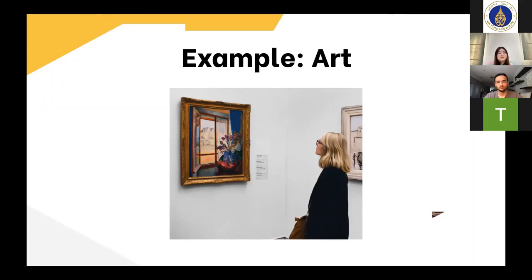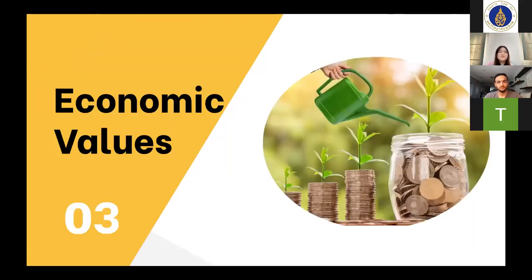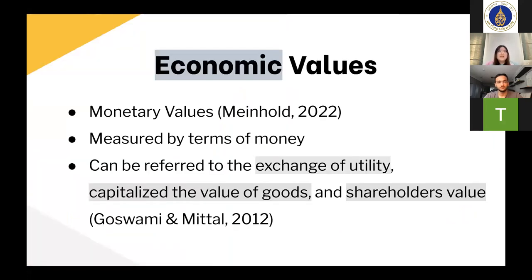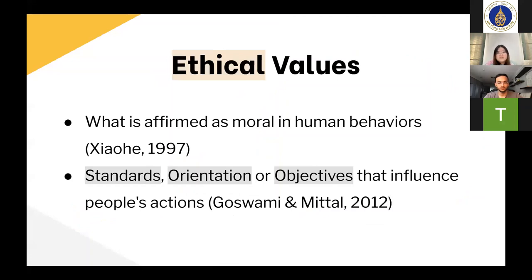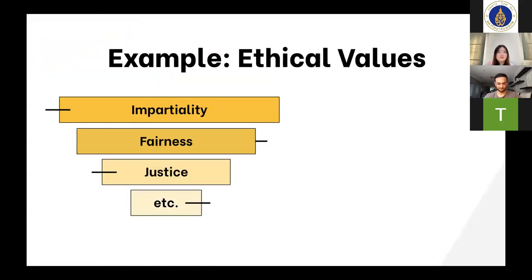Values can be described in many more types, and what we are going to focus on are the two main values: economic and ethical values. Economic values are like monetary values that can be measured or categorized in terms of money — they can refer to exchange of utility, capitalized values of goods, and shareholder's values. For ethical values, they represent what is affirmed as moral in human behaviors, referring to the standards, orientation, and objectives that influence people's actions. Examples of ethical values include impartiality, fairness, justice, and many more.